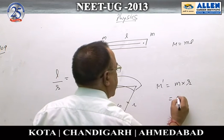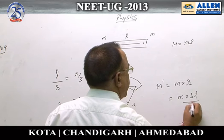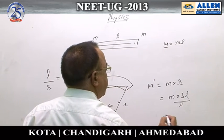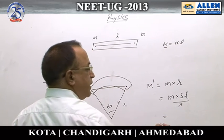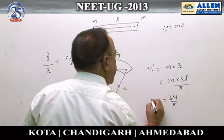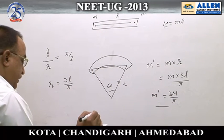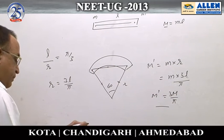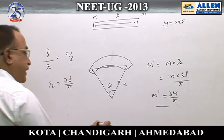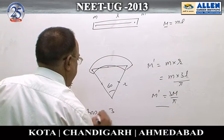If I put it here: the new magnetic dipole moment is m × (3l/π). Since m × l equals capital M, the previous value of the magnetic dipole moment, the new magnetic dipole moment is 3M/π. Option number 3 is the correct option, answer is 3.